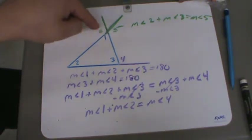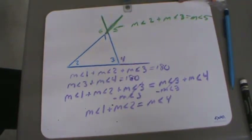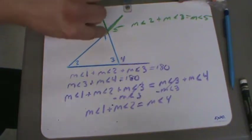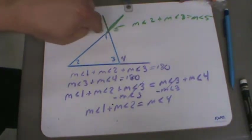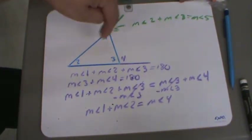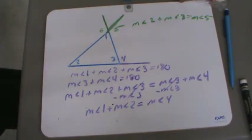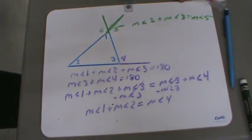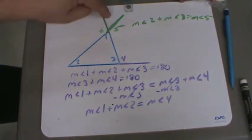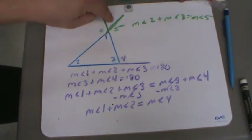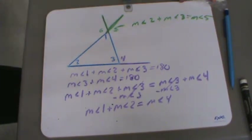Well, we know that angles 5 and 6 are vertical angles, and vertical angles are congruent. So whether I extend this way or that way, these two angles are going to be equal to the measure of angles 2 and 3 added together, because the measure of angle 5 is going to equal the measure of angle 6. What about the angle up here? That angle is vertical with angle 1, so it's going to be equal to angle 1.